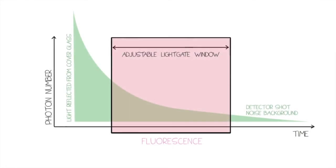Leica's light gate is an adjustable temporal window that removes these unwanted emissions to ensure that only fluorescence signals are collected for imaging.